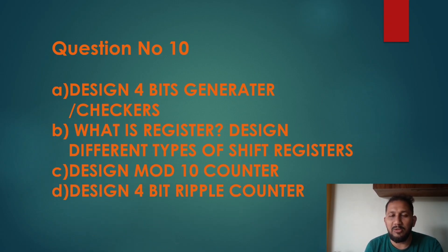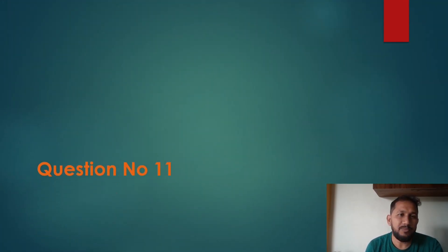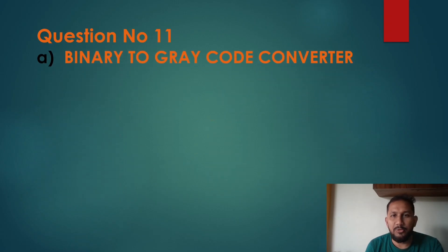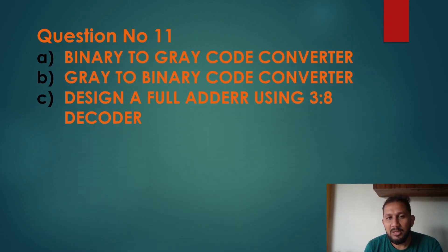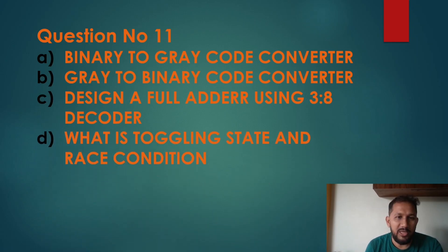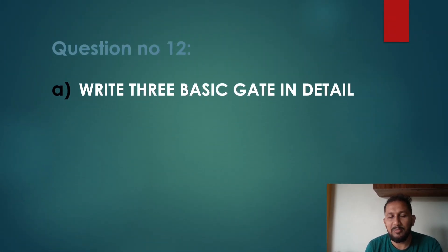Design mod 10 counter. Design 4-bit ripple counter. Binary to gray code converter. Gray to binary code converter. Full adder using 3-8 decoder. What is toggling state and race condition? How race condition can be avoided?